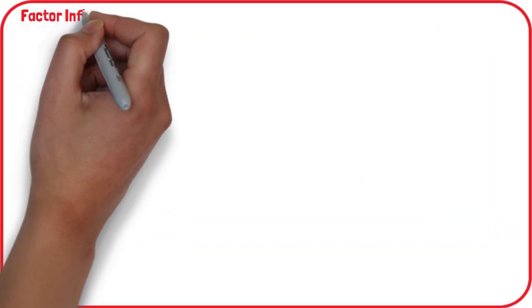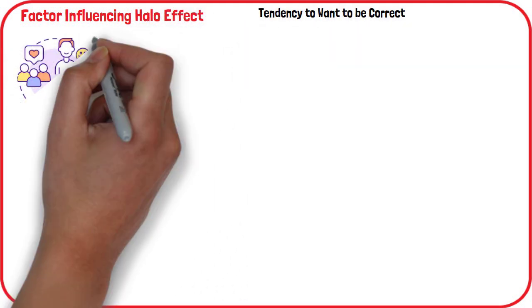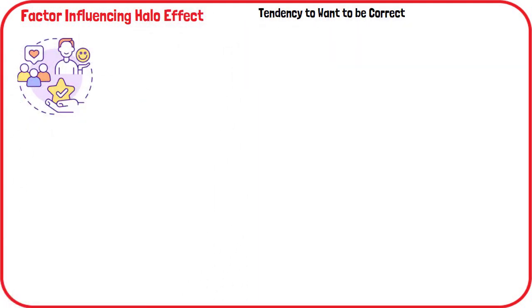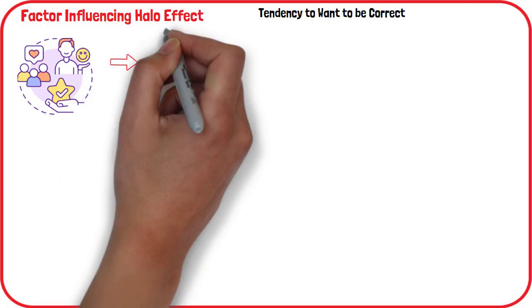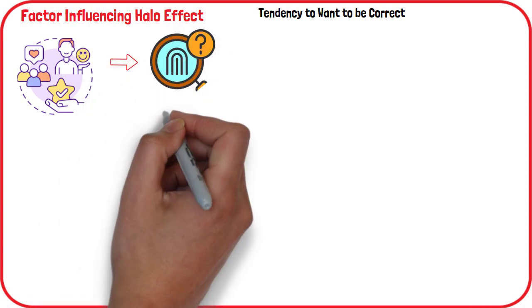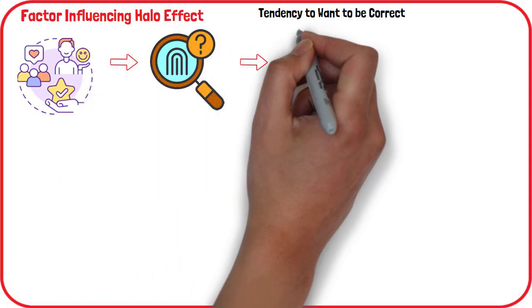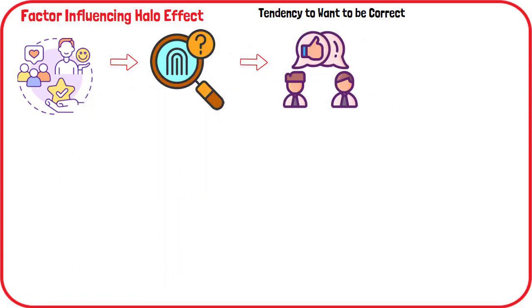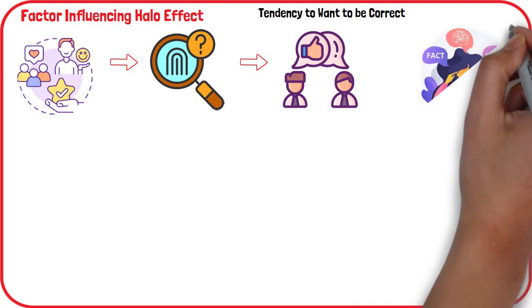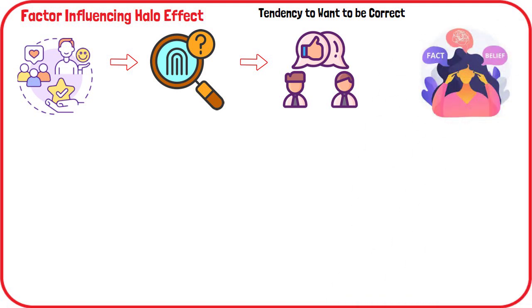One factor that may influence the halo effect is our tendency to want to be correct. If our initial impression of someone was positive, we want to look for proof that our assessment was accurate. It also helps people avoid experiencing cognitive dissonance, which involves holding contradictory beliefs.